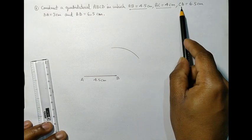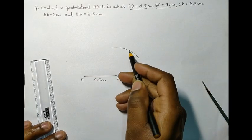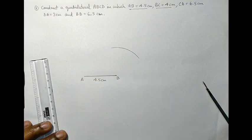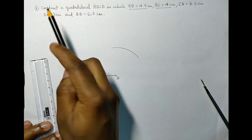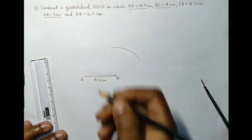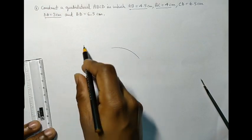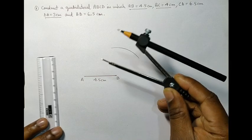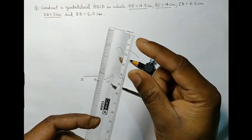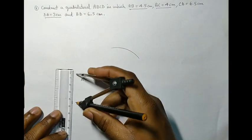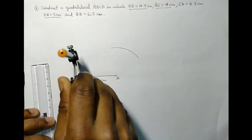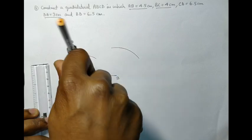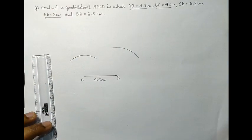Now, CD is equal to 6.5, but we do not know where C is, and so we cannot cut an arc on D. But we have DA, which is equal to 3 cm, so it means AD will be 3 cm, so we can take the radius of 3 cm using the ruler and compass. And from A, we can cut an arc above to get 3 cm.